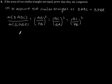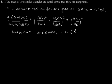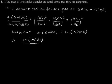Now it is given that area of triangle ABC is equal to area of triangle PQR, which implies area of triangle ABC by area of triangle PQR is equal to 1.